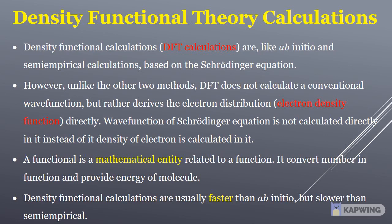DFT does not calculate a conventional wave function, but rather derives the electron distribution, electron density function, directly. Wave function of Schrödinger equation is not calculated directly; instead the density of electron is calculated. A functional is a mathematical entity related to a function. It converts number and function and provides energy of molecule.